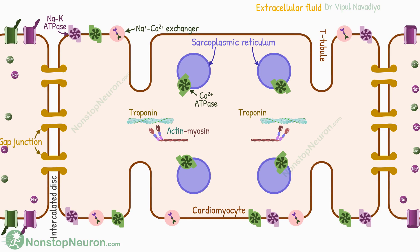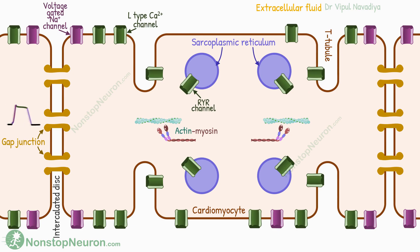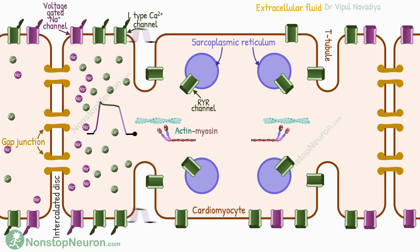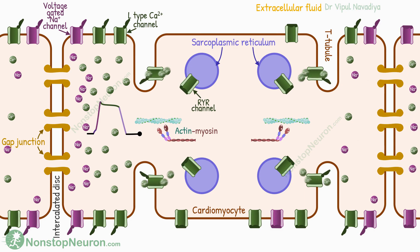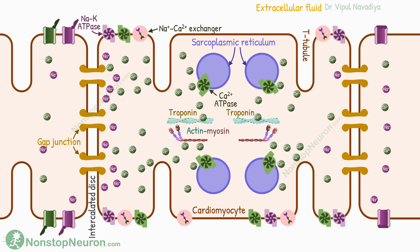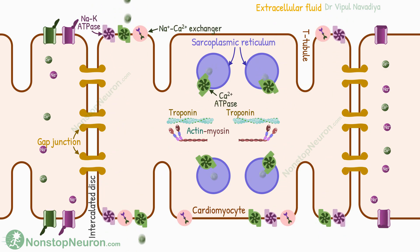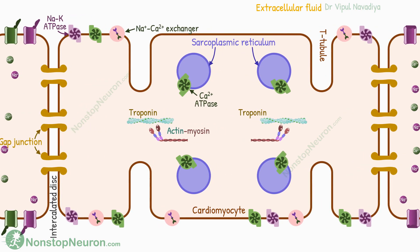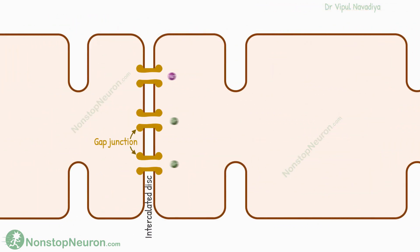So this was all about excitation-contraction coupling in cardiac muscles. Now let's have a quick summary. Electric activity in one cardiac cell is transmitted to the next cell through gap junctions at the intercalated discs. The calcium entering from the extracellular fluid causes the release of calcium from the sarcoplasmic reticulum as well. The calcium binds with troponin C and initiates the cross-bridge cycle, producing contraction. To terminate the contraction, sodium and calcium are removed from the cytosol, producing relaxation.